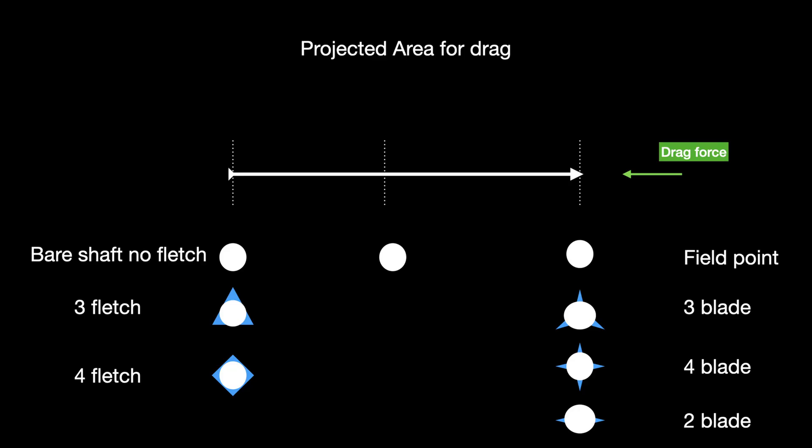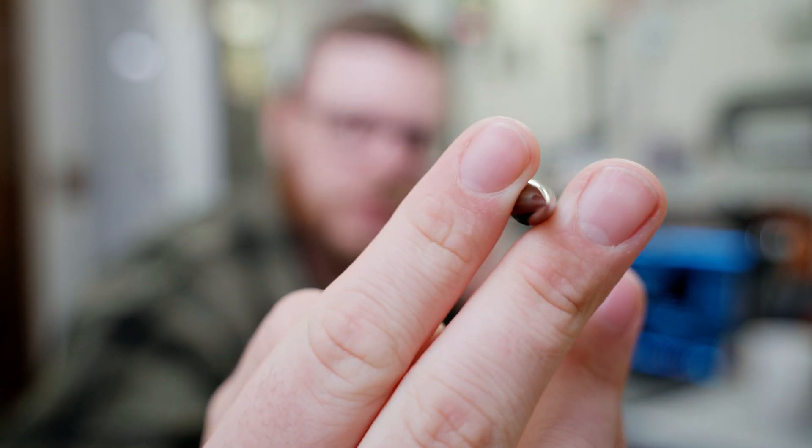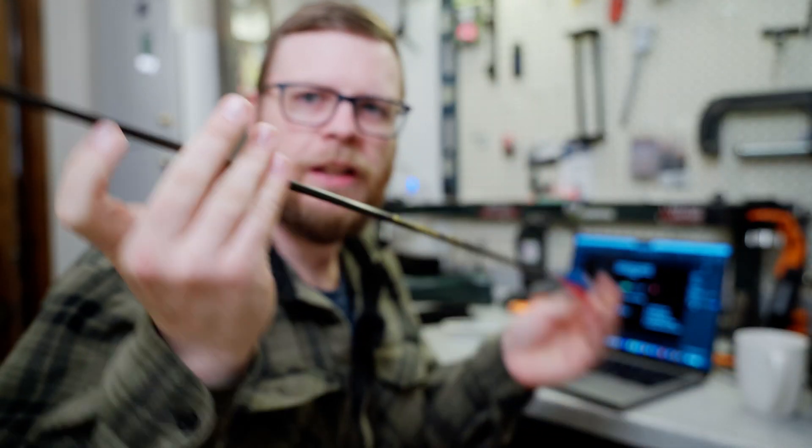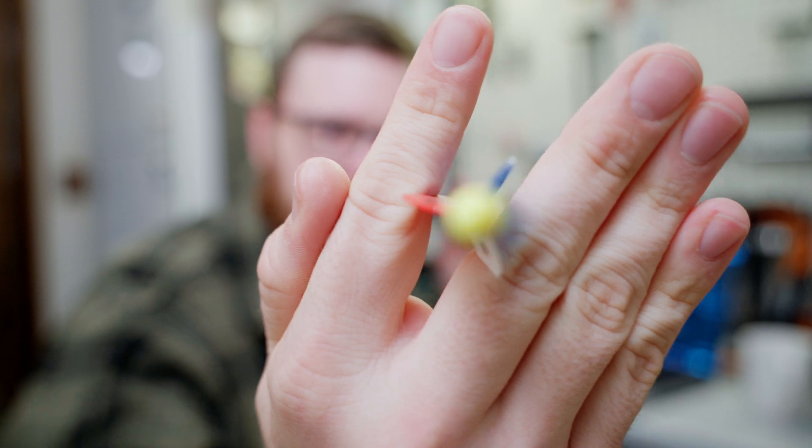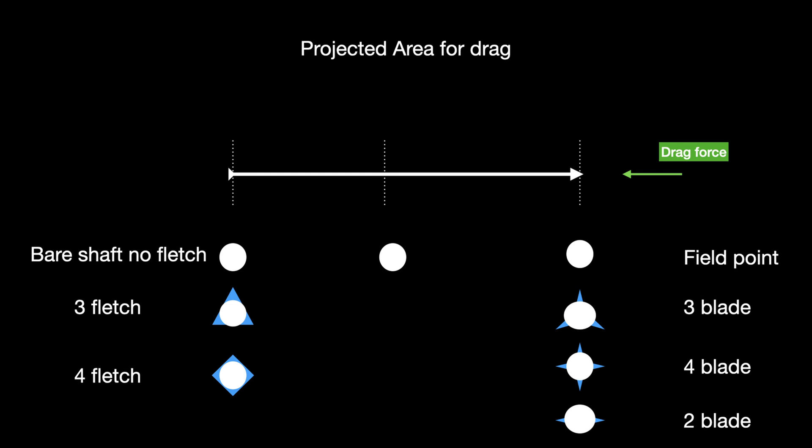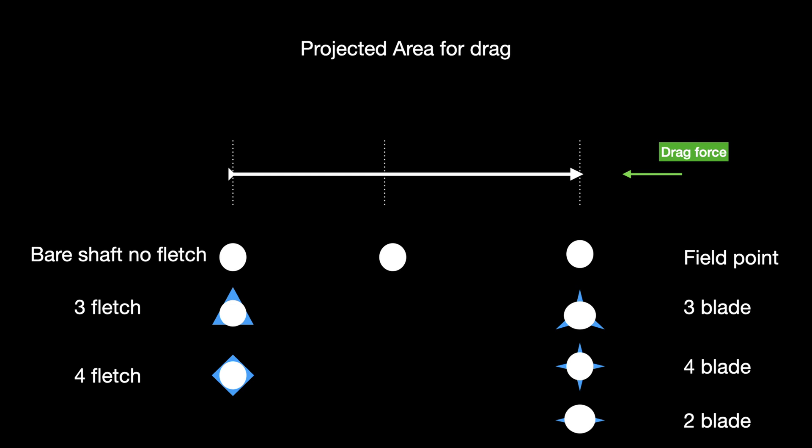And then there's the projected area of the arrow that faces the drag. What does that mean? It means if you're looking down the shaft at the front, you'd see that area, and at the very end you're going to see the fletchings in that profile. When you add broadheads, you change the projected area exposed to drag. That's why a broadhead is typically going to fly heavier — it induces more drag than a field point will.